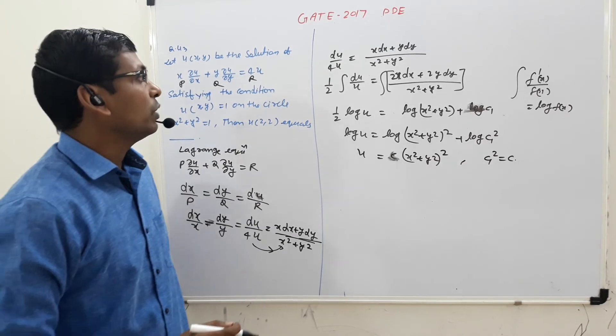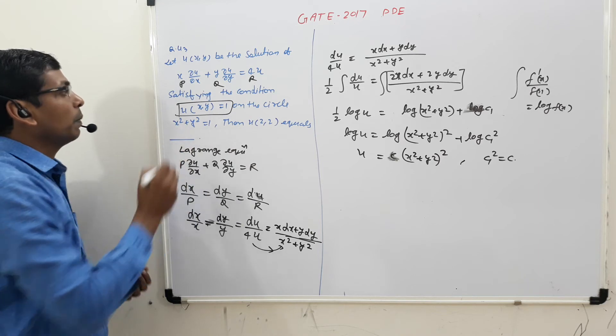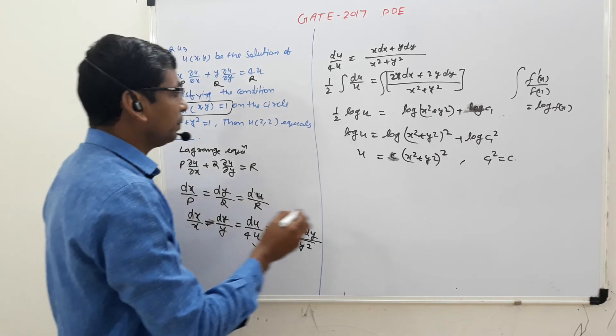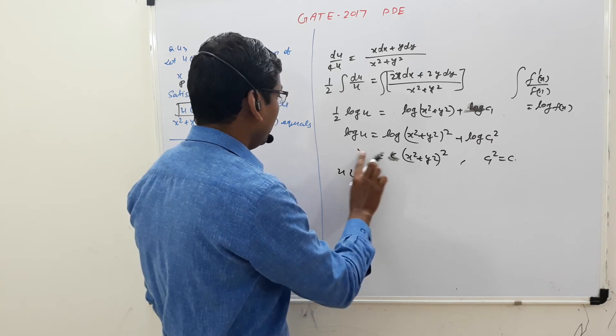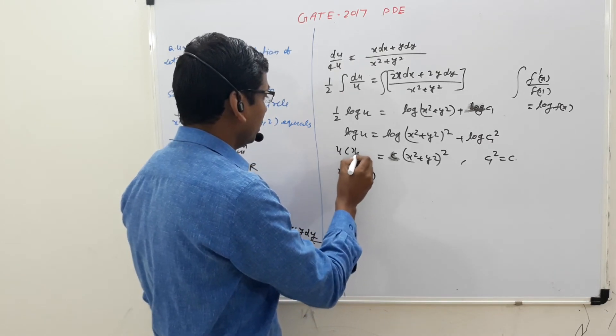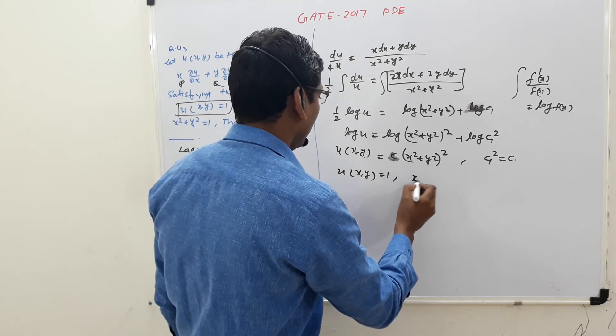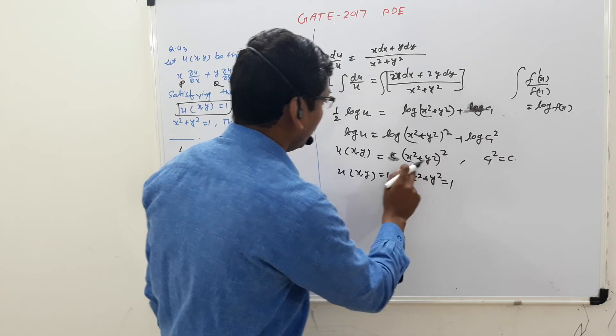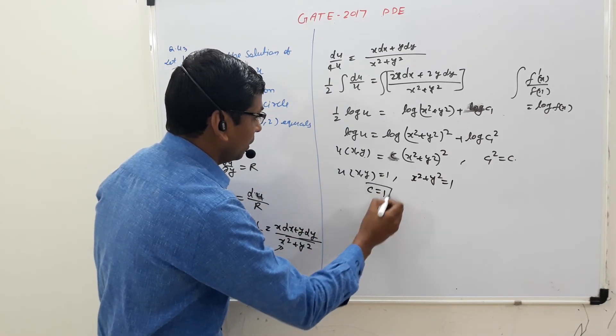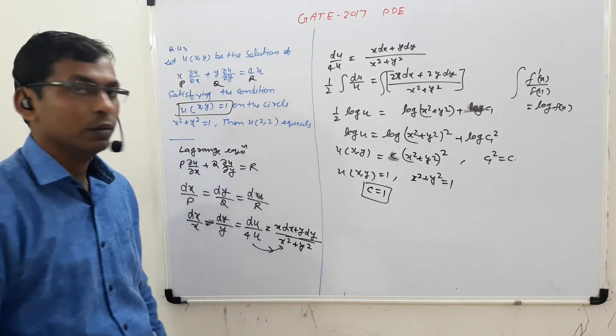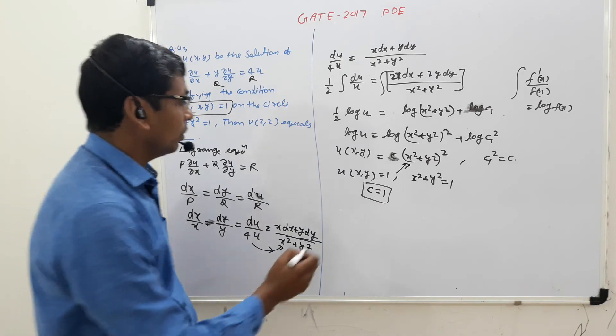Now find the value of c. First we use the boundary condition given here. When u(x,y) = 1, x^2 + y^2 = 1. So put here then simplify, so c is equal to 1. Then c is 1, so u(x,y) is equal to (x^2 + y^2)^2.